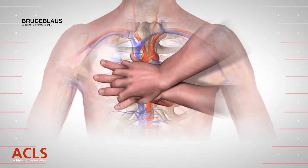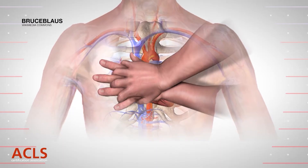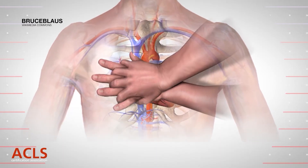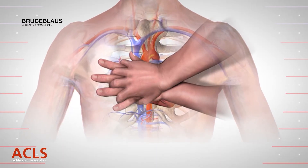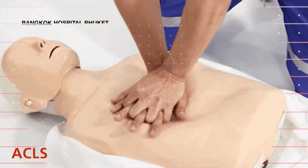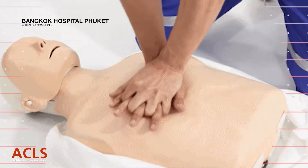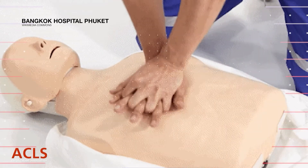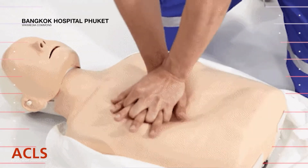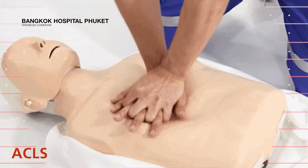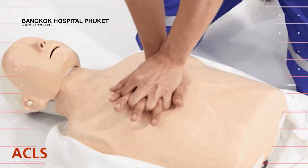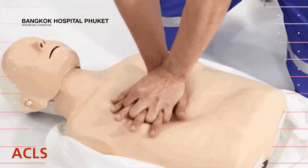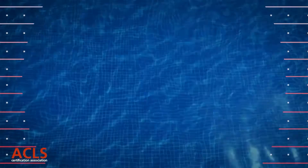Begin chest compressions. Place your hands with fingers interlaced between the nipples and just slightly below the nipple line. Compress the center of the chest — the lower half of the sternum — allowing the chest to return to its natural position in between compressions.